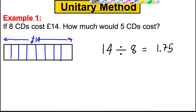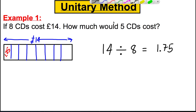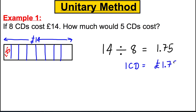Now what does that tell us? That tells us that 1.75 must go in each box — i.e., 1 CD is equal to £1.75. Now the question is how much are 5 CDs? So 5 CDs must be 1.75 added together 5 times.